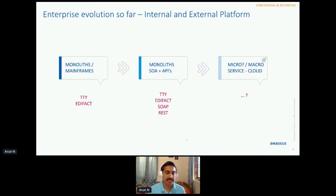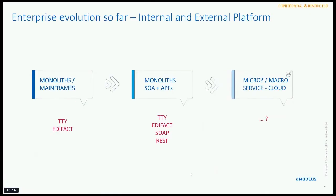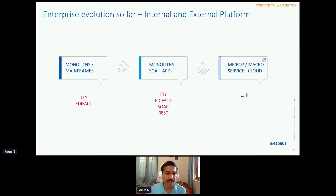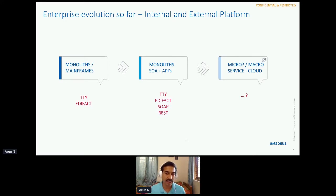Let's quickly look at the enterprise evolution. I'm assuming many organizations, including where you are, have also gone through this evolution — if you're a 30 or 40 year old company, you've probably evolved through some of these processes. We started with monoliths, with B2B communication on mainframes using TTY or EDIFACT messaging. We slowly evolved into a monolithic SOA-based approach — you could call it a large macro-service — along with some APIs extending beyond TTY and EDIFACT to SOAP and REST APIs. Then we obviously scaled further, going largely into the cloud ecosystem.